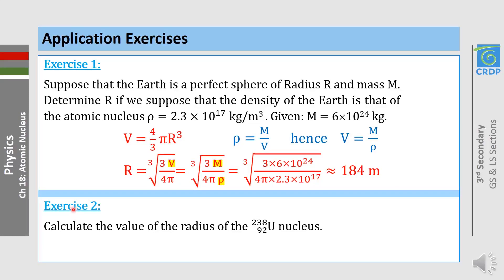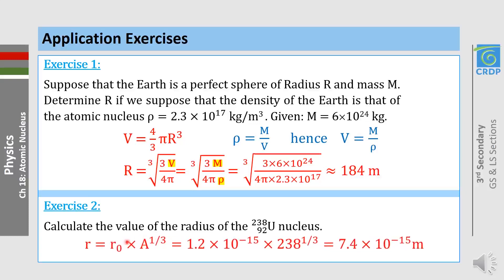Exercise 2: Calculate the radius of the uranium nucleus. Applying R = R₀ × A^(1/3), where R₀ = 1.2 × 10⁻¹⁵ m and A = 238, we get R = 1.2 × 10⁻¹⁵ × 238^(1/3) ≈ 7.4 × 10⁻¹⁵ meters.